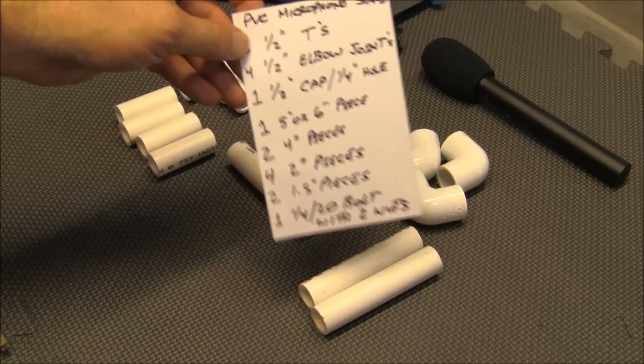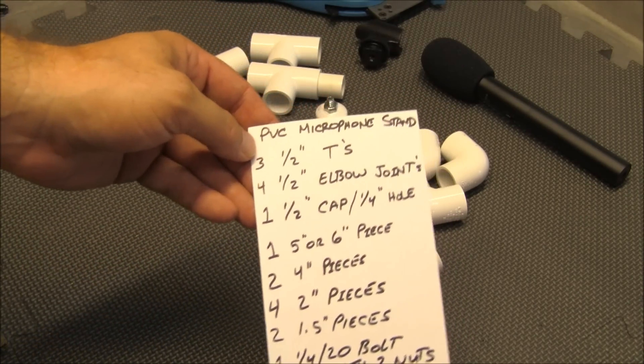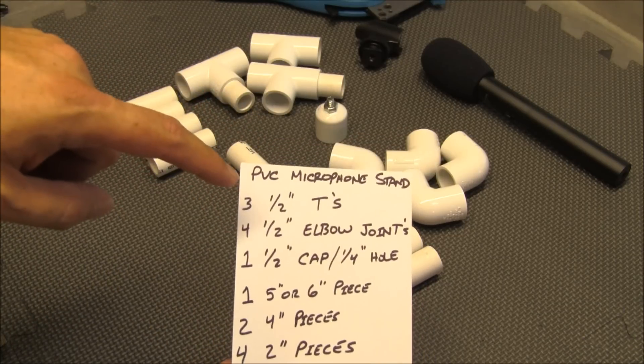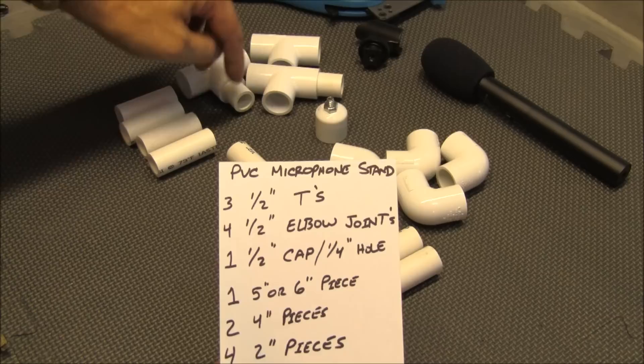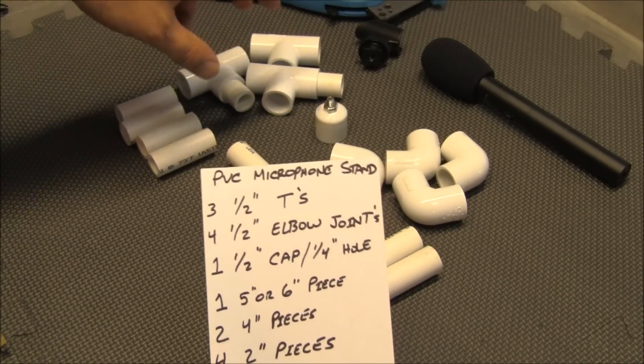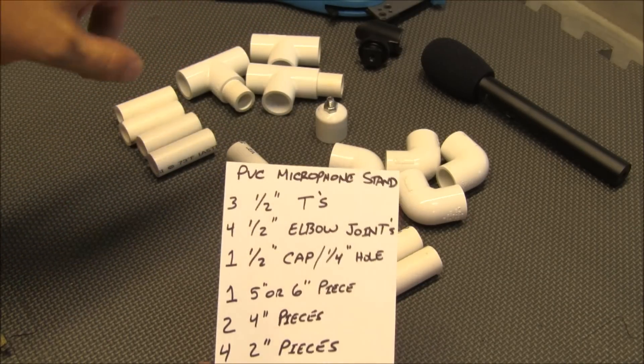Let me give you a parts list real quick, show you what you need. You're going to need three 1.5 inch tees. I actually have two pieces of PVC stuffed inside them, I can't really get them out because they're in there pretty good but I'll talk about that in a second.